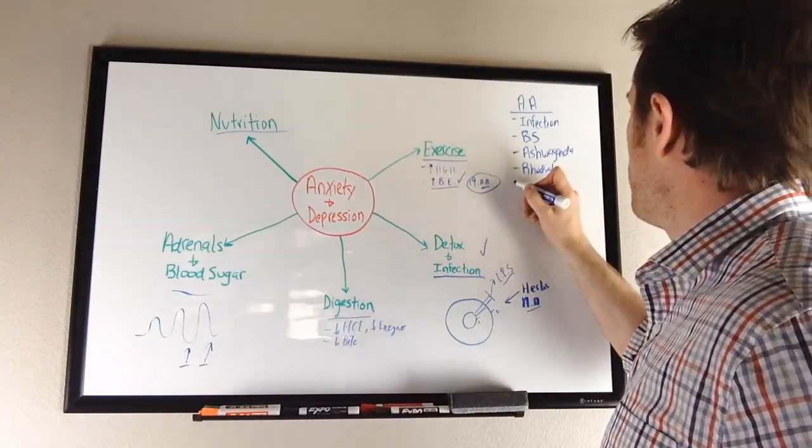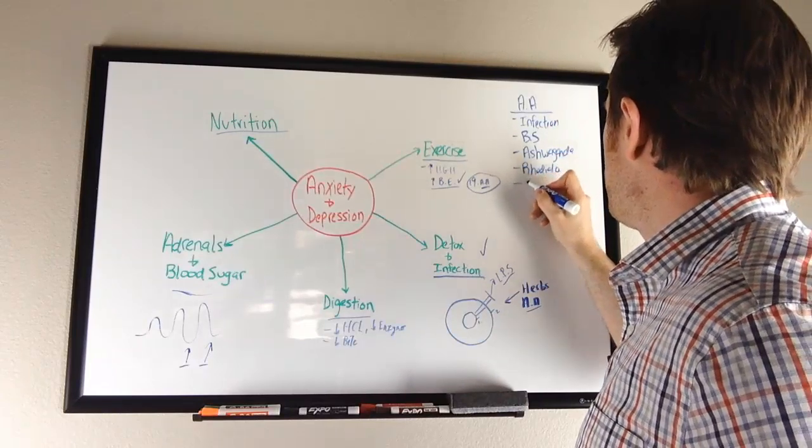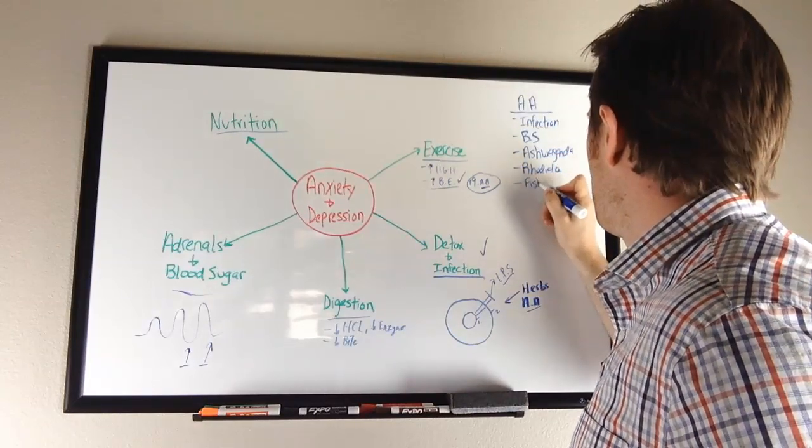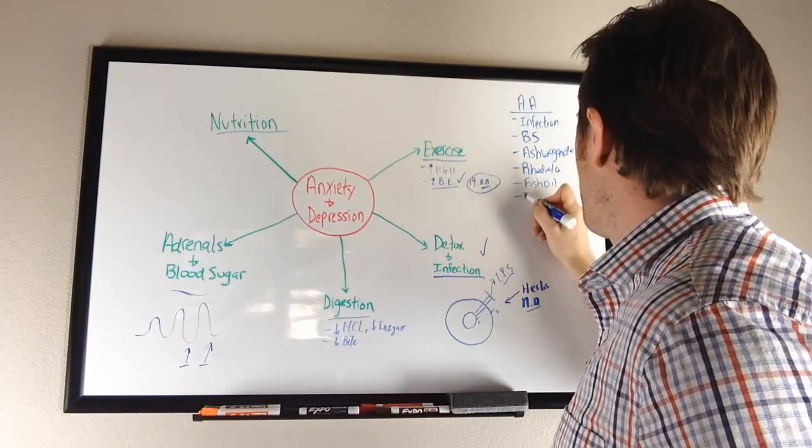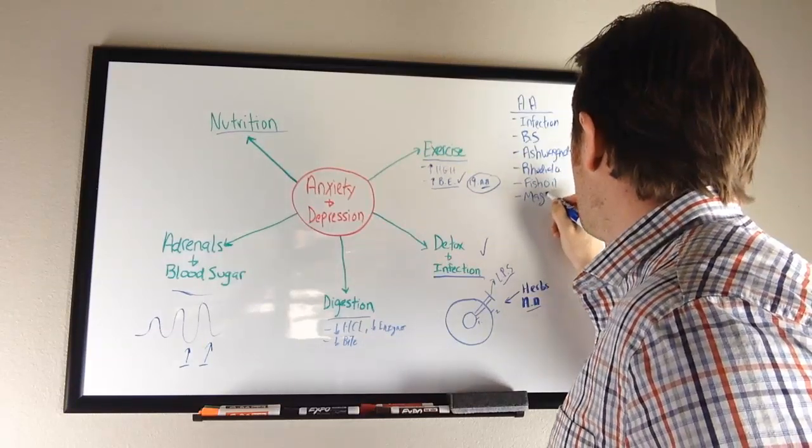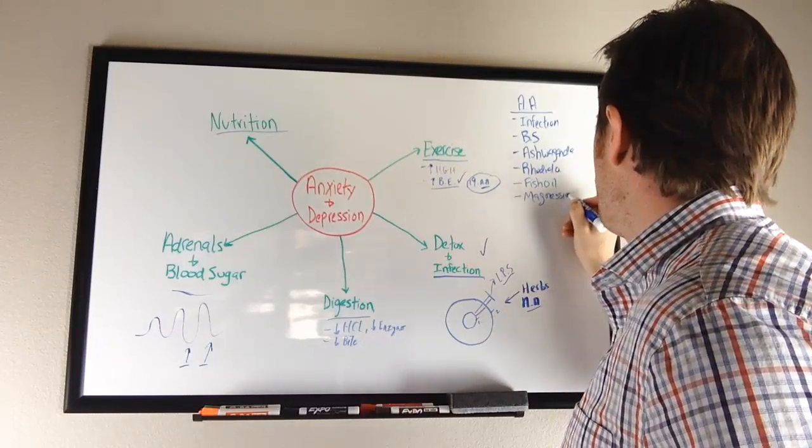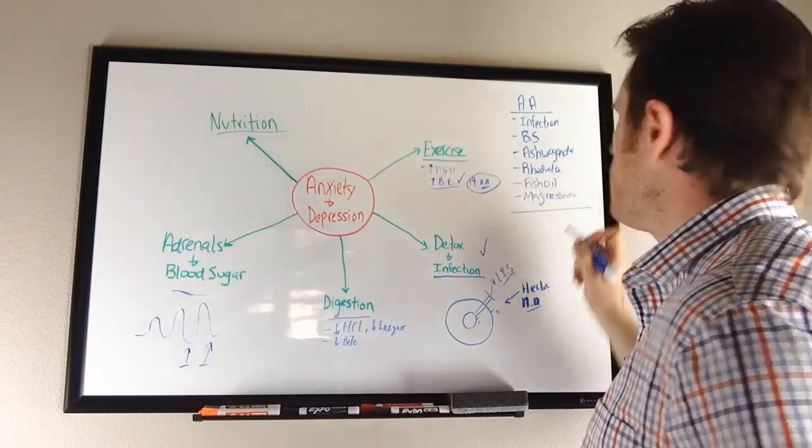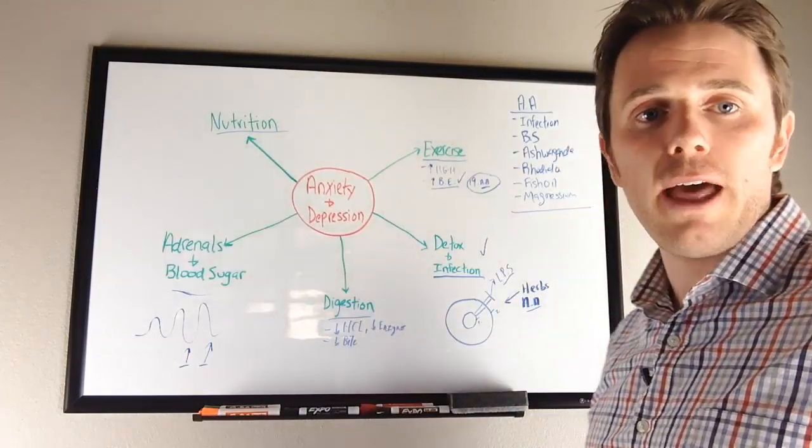Another one for anxiety and depression is going to be fish oil and also magnesium. These are really simple things that you can just add in off the bat that you'll get significant benefit.